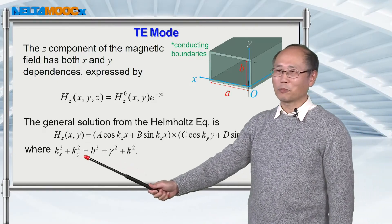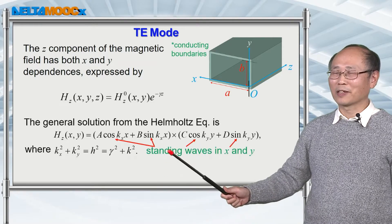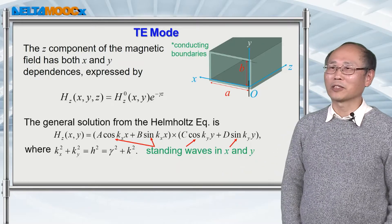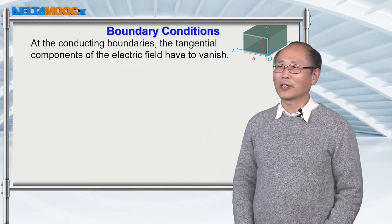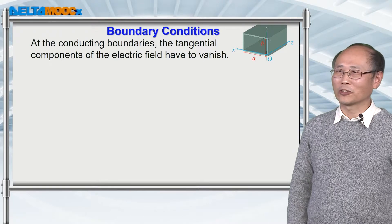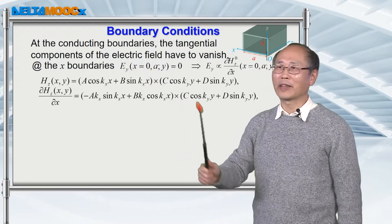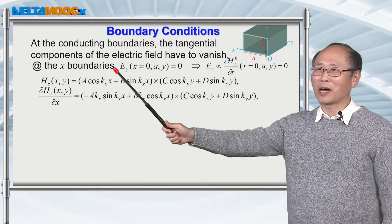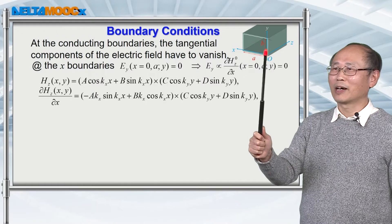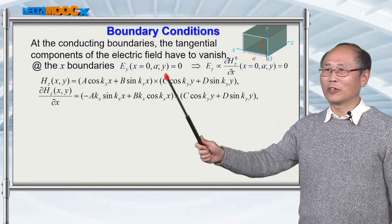This dispersion relationship is the same as that used for TM mode. Don't forget that you have the standing wave solution along x and y-direction. Now we need to apply boundary conditions to figure out all the coefficients for the general solution. The first boundary condition is at x equal to 0 and x equal to a — the x boundaries. The tangential component of the electric field, which is Ey, has to be equal to 0.